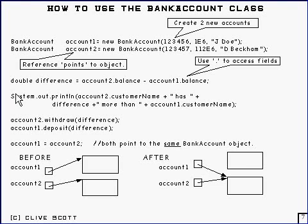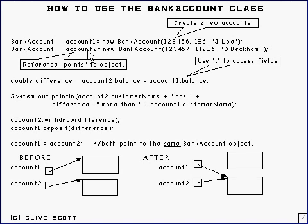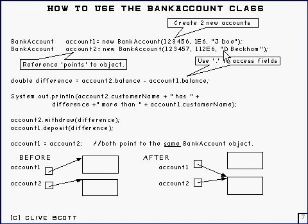Here's a little bit of code to illustrate how you might actually use that bank account object. This is the type here, and that's a variable, account1. This creates two bank accounts, and here's how you do it. There's the variable account1, there's the type bank account, and here's the call to the constructor for bank account with the keyword new in front of it. There's the account number, the balance, opening balance, and the name. And that apparently is how much he's worth, dBeckham.